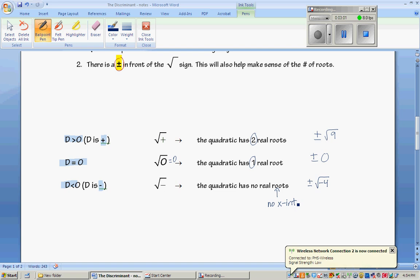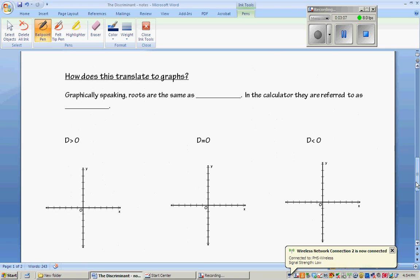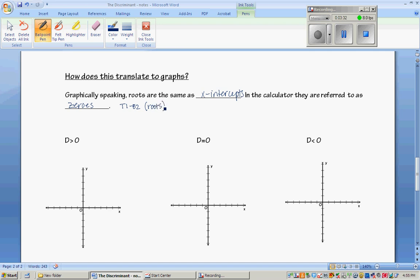It doesn't mean we can't get an answer because we're going to learn how to take the square root of a negative number in this chapter. Let's check out what that does for us graphically. The roots are the same as the x-intercepts. In the calculator they are referred to as zeros. If you have a super old school TI-82, they will be referred to as roots. That's why it's important to know all three of these things are synonyms. When D is greater than zero, we have two roots, so we should have a parabola that crosses the x-axis twice.